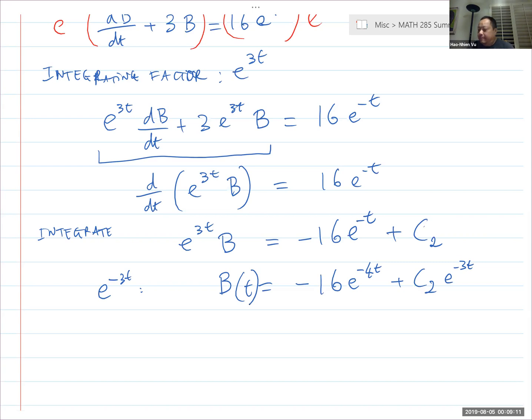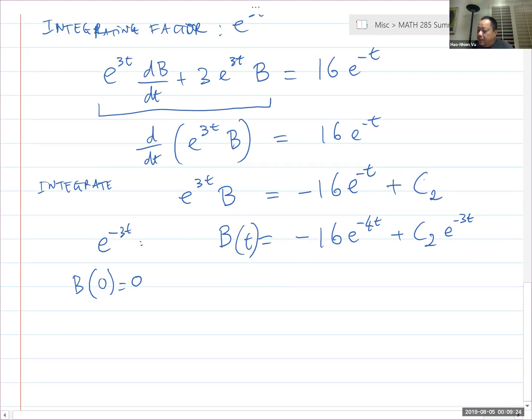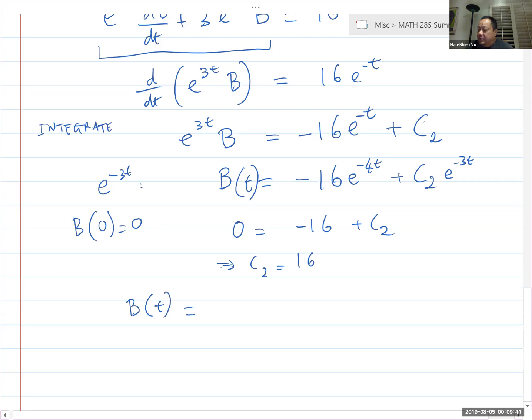All right. So this is the mass of B as a function of t. And we're given that at the beginning the container has nothing but 4 kilograms of A. No B's, no C's. So B(0) is equal to 0. I plug everything in. I get 0 is equal to negative 16 times 1 plus C_2 times 1. So C_2 is equal to 16 and my final form for B(t) is negative 16e^(-4t) plus 16e^(-3t).